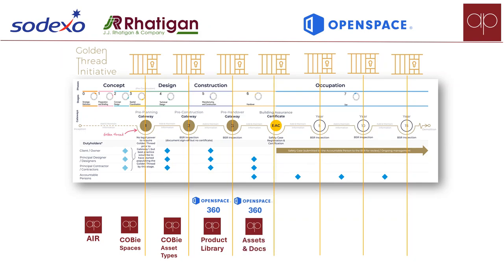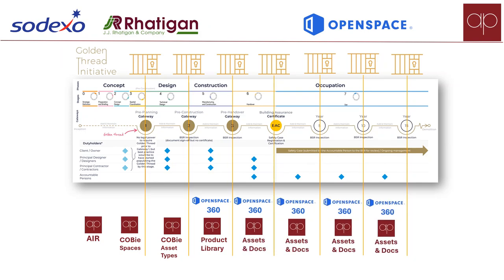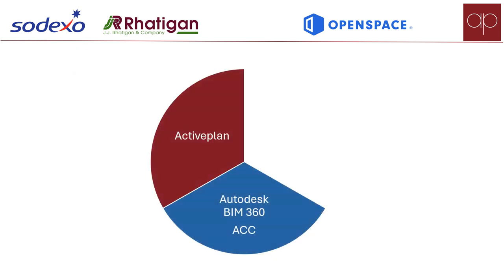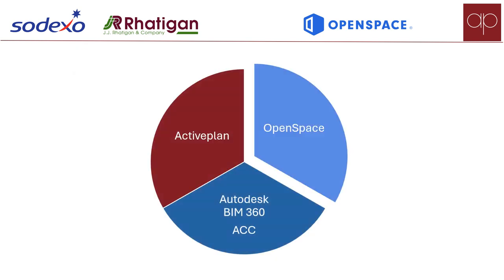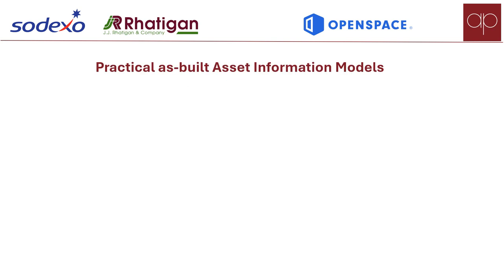Asset managers call this progressive assurance — ActivePlan validating the asset data across the construction. This will be great for FMs who are using soft landings and should reduce the risk of disputes and retentions at the end of the project. Both ActivePlan and OpenSpace are Autodesk developers and integrate with BIM 360 to help deliver a very practical as-built model at a fraction of the cost.